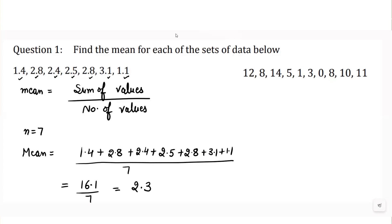Similarly, for the next question we find out how many total values there are. Counting them: 1, 2, 3, 4, 5, 6, 7, 8, 9, 10 — so there are 10 values in total. In this set of data they have given a 0, and we count that 0 as a value, so total values are 10.